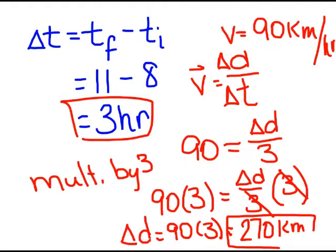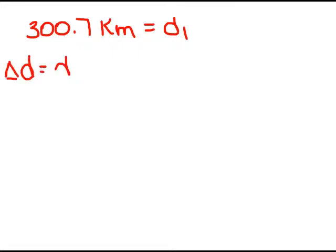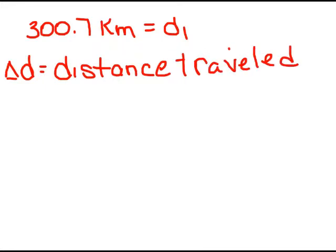That's how far they travel in that 3 hour time span. Well, do they make the cotton bowl? This is where our distances come into play. We know from Stillwater to the river was 300.7 kilometers. That's our distance 1. In our formula, we found that the distance they could travel or the change in distance which is the distance traveled was 270 kilometers. So, they haven't even made it out of Oklahoma. They're still in Oklahoma.